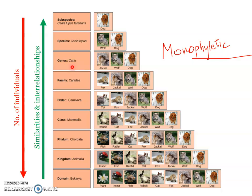A taxon is a named taxonomic group of any rank in the hierarchical classification. As Simpson puts it, it is a group of real organisms recognized as a formal unit at any level of hierarchical classification. The rank of a taxon is that of the category of which it is a member. Members of a taxon show a higher degree of similarity — for example, species Canis lupus members will show more similarities among themselves in morphology, anatomy, and genetics.